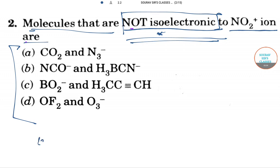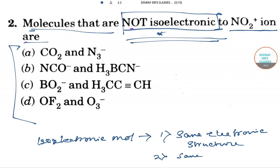Let me remind you one thing - isoelectronic molecules have mainly two properties. One is same electronic structure, and another property is same number of valence electrons.